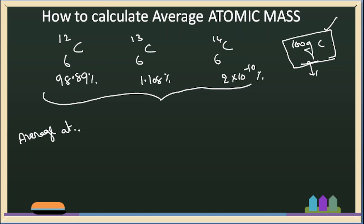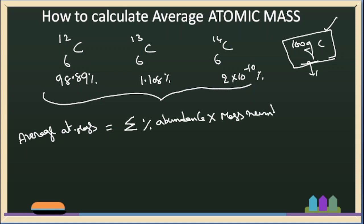Average atomic mass. Average atomic mass can be calculated by using the formula sigma — that is, the sum of: percentage abundance multiplied by its mass number, for each isotope.